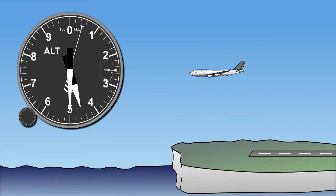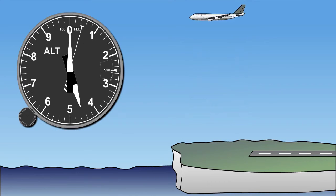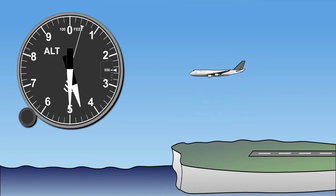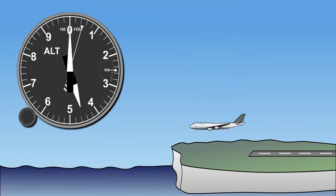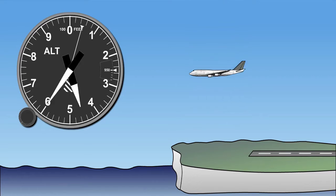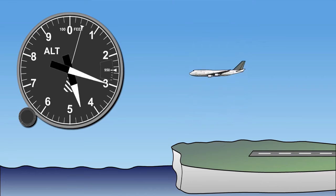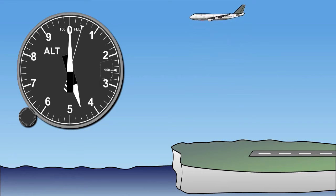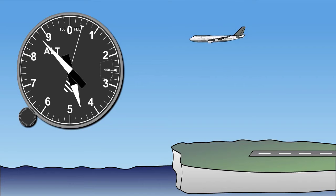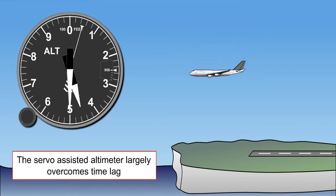The fourth error to look at is time lag. With many types of altimeter the response to a change of height is not instantaneous because of the time taken for the aneroid capsules and linkages to respond to changes in static pressure. This time lag is most noticeable when the change in altitude is prolonged and rapid, and causes the altimeter to under-read in a climb and to over-read in a descent. The problem is largely overcome in the servo assisted altimeter, which does not suffer from any appreciable time lag at normal rates of climb and descent.